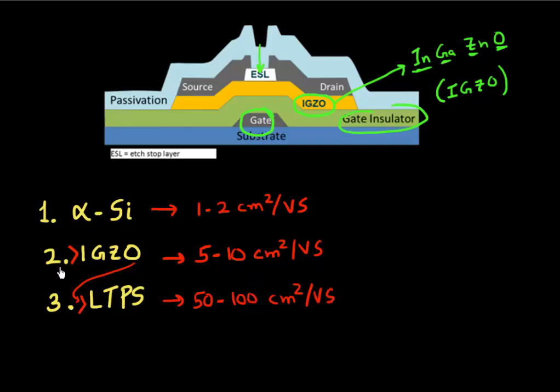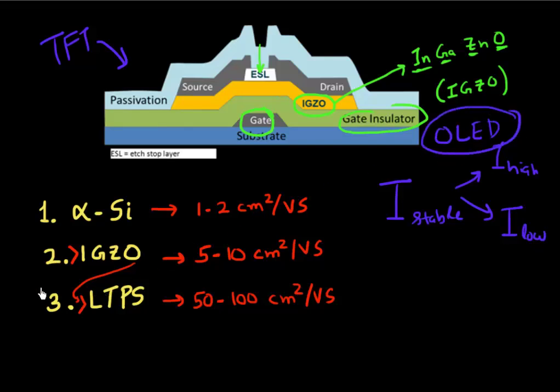So another important thing about this as we talked about LCD versus OLED, another very important requirement for OLED-based display is that you want this TFT should be capable of supplying a very stable current. So this current should be stable both when it's high and when it's low. So for OLED-based display, the only material that can work is this low temperature polysilicon.